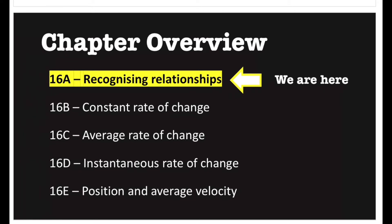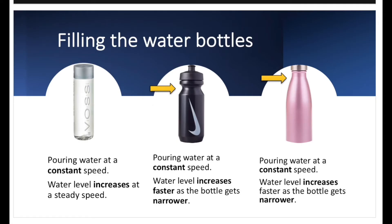Here is an overview of what to expect in this chapter. We have five exercises and today we'll be focusing on 16a. Here we have three water bottles that have different shapes. The first bottle is a regular cylindrical shape, so when we're pouring water at a constant speed, the water level will increase at a steady speed also.